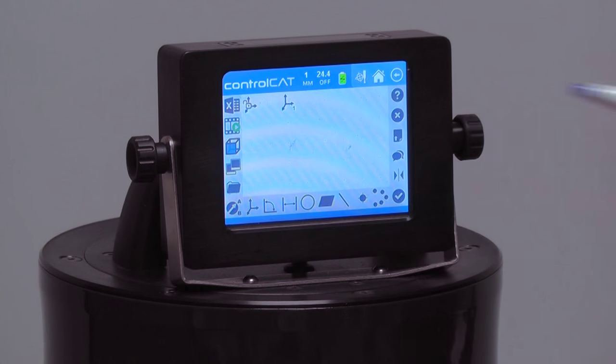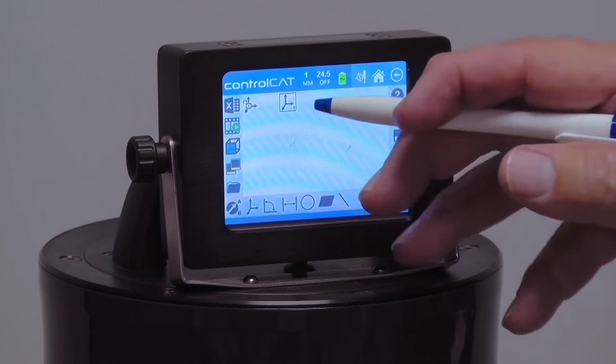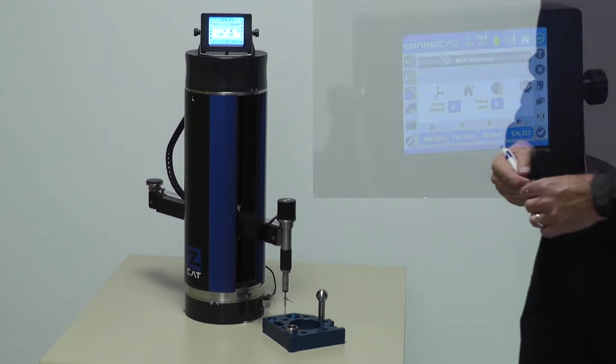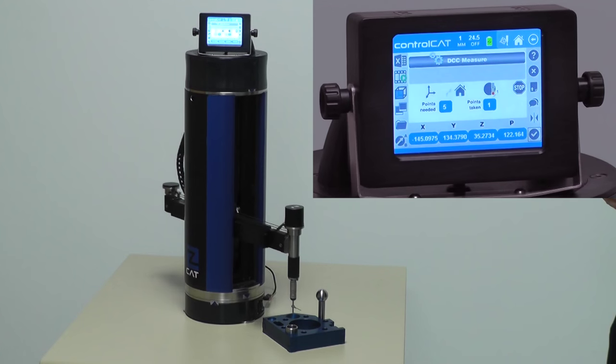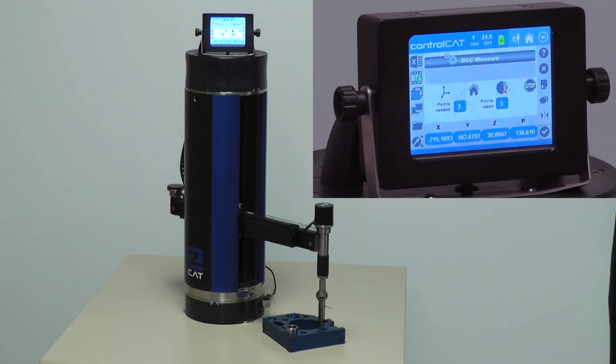And you'll see it says alignment one. Before when we told it to number them, this is alignment number one. Now to actually run that alignment, I'll highlight it again by touching it. And I'll hit the check. Now the Zcat will go under DCC and take those same exact points only under computer control.